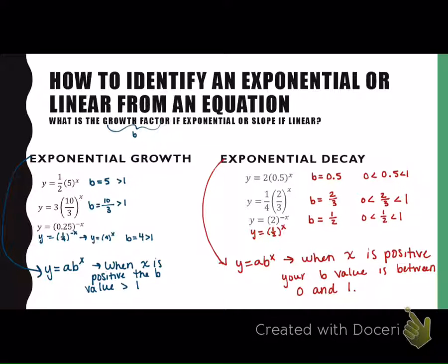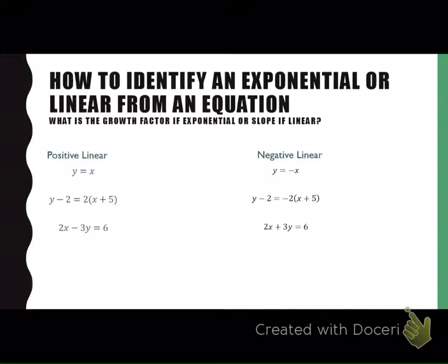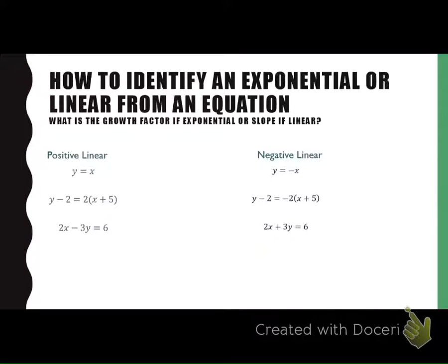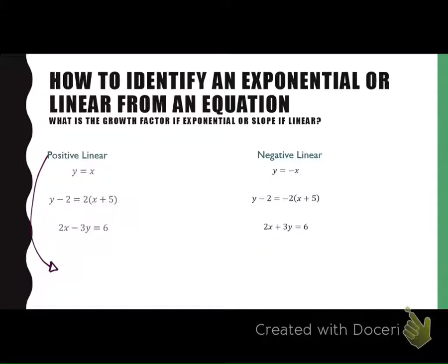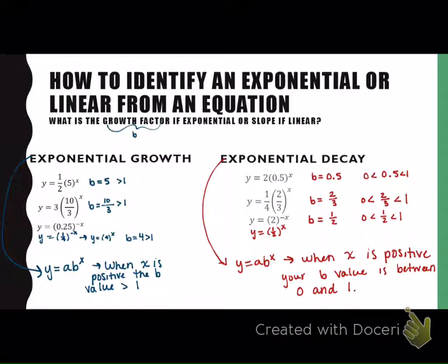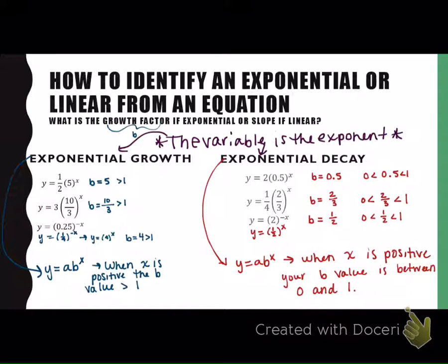All right, let's look at lines. How do you identify if it's a line from the equation? Then we're going to determine what our slope is. So who can tell me how I know if something is a line from an equation? Can you guys add a note to this? If it's exponential, the variable is the exponent. So that's very important you realize this. So if it's exponential, the variable is the exponent. So x is my exponent. So that's how you know it's exponential in the first place, and then you can determine if it's growth from there.